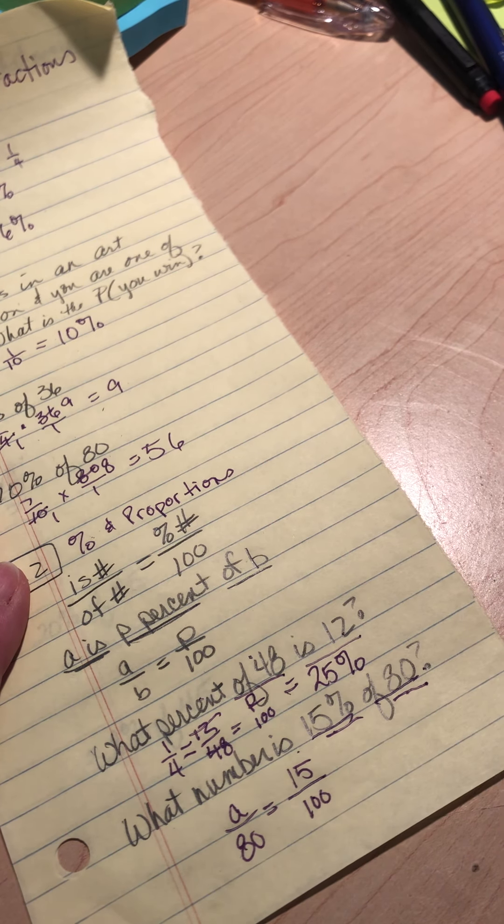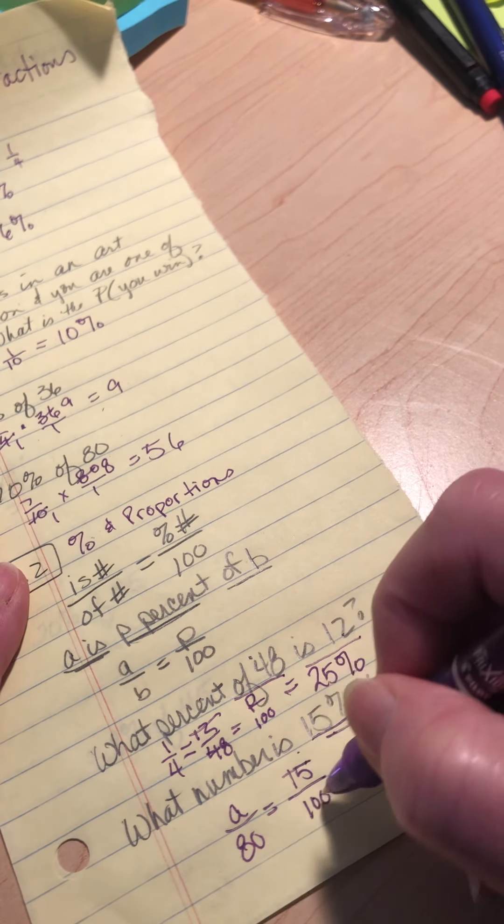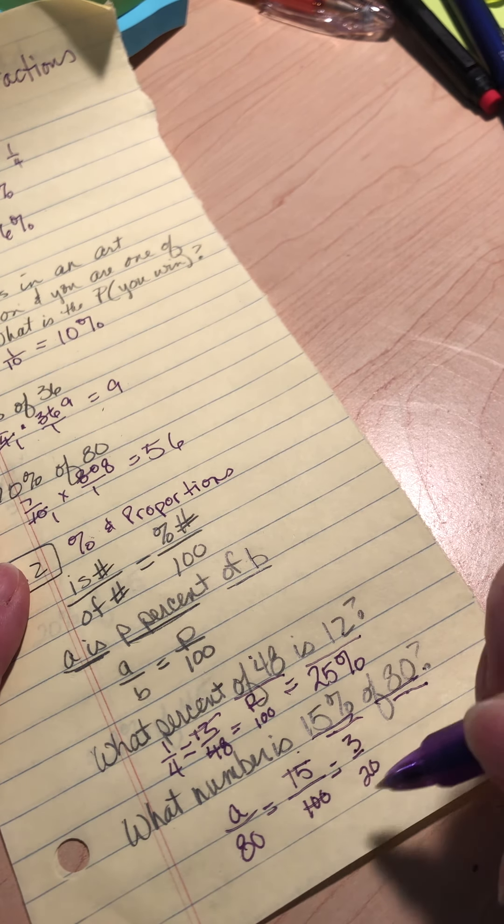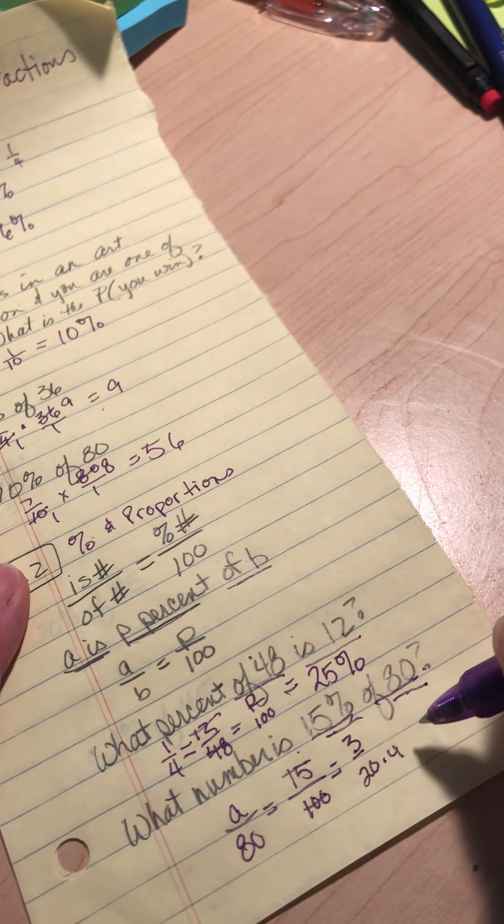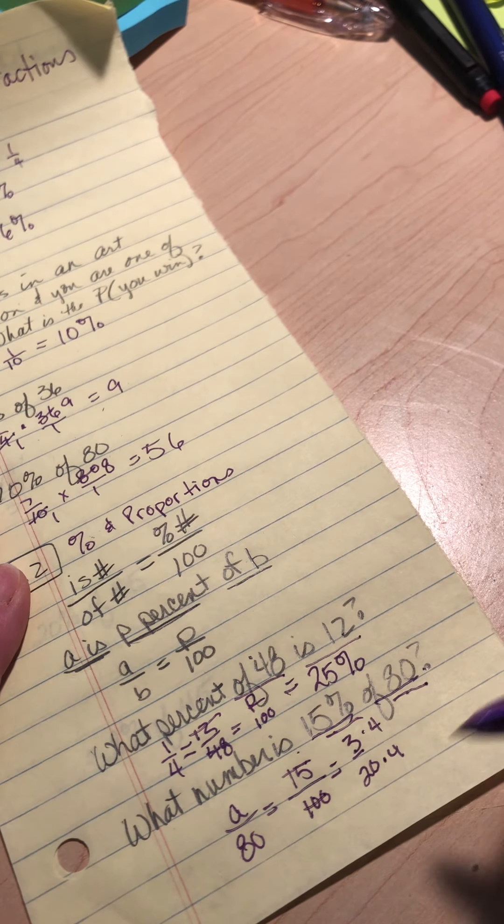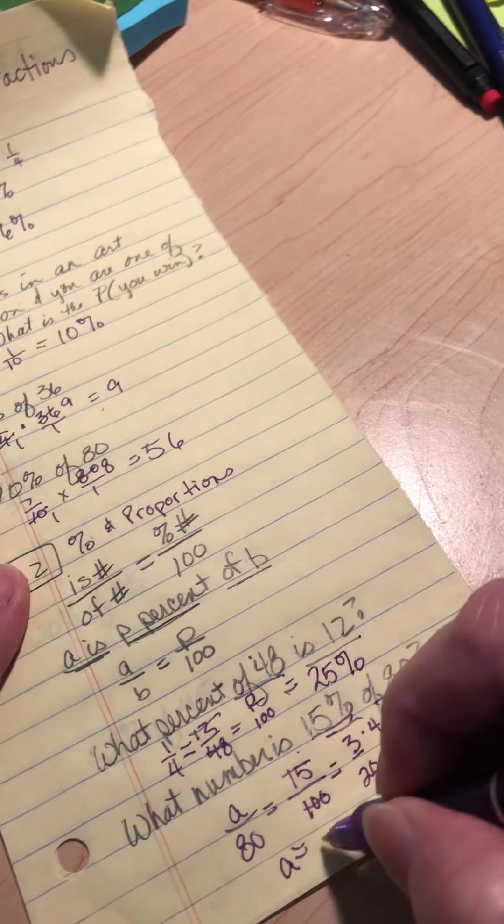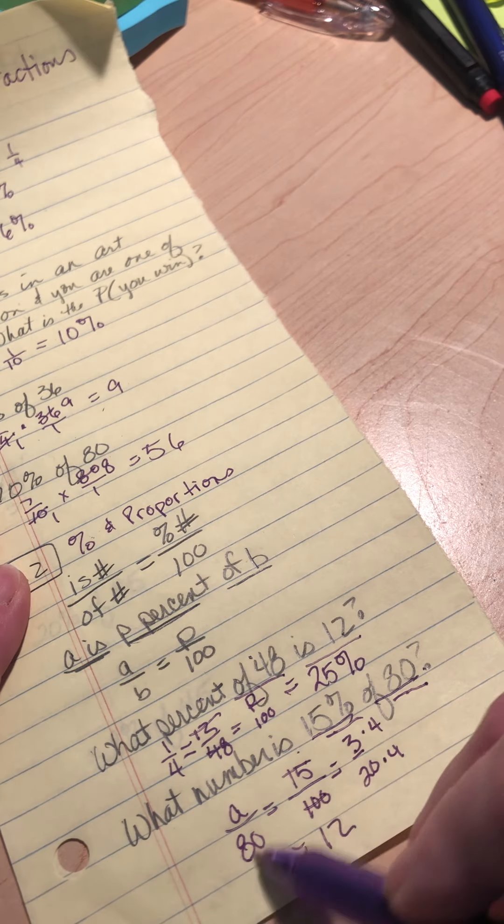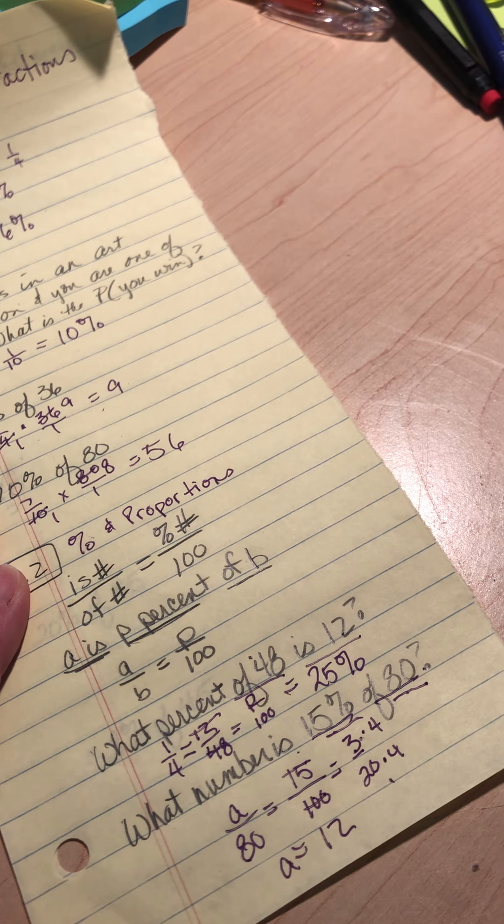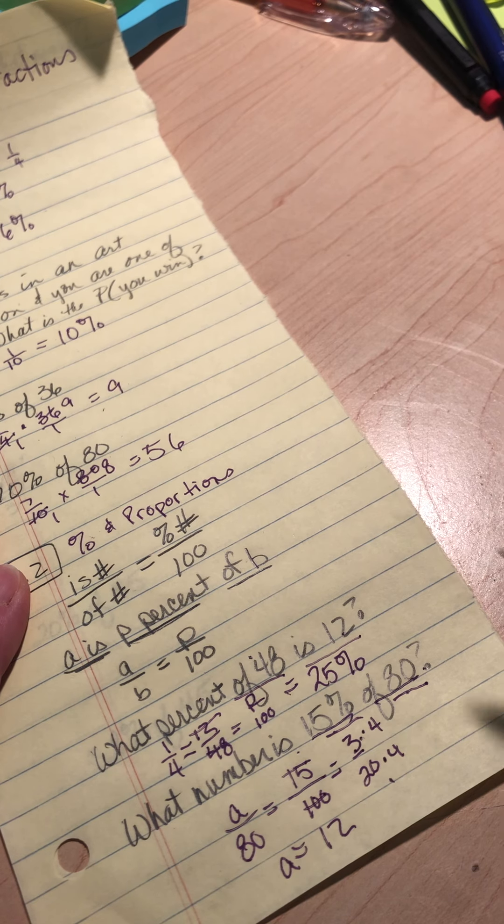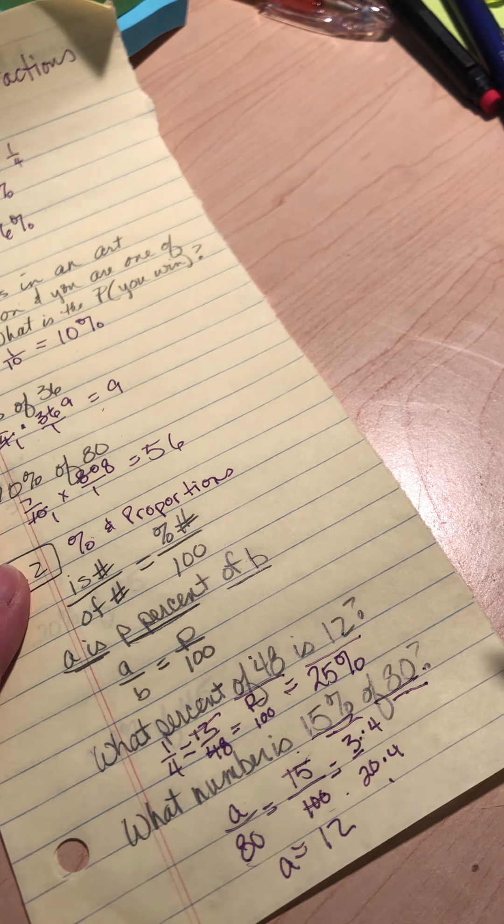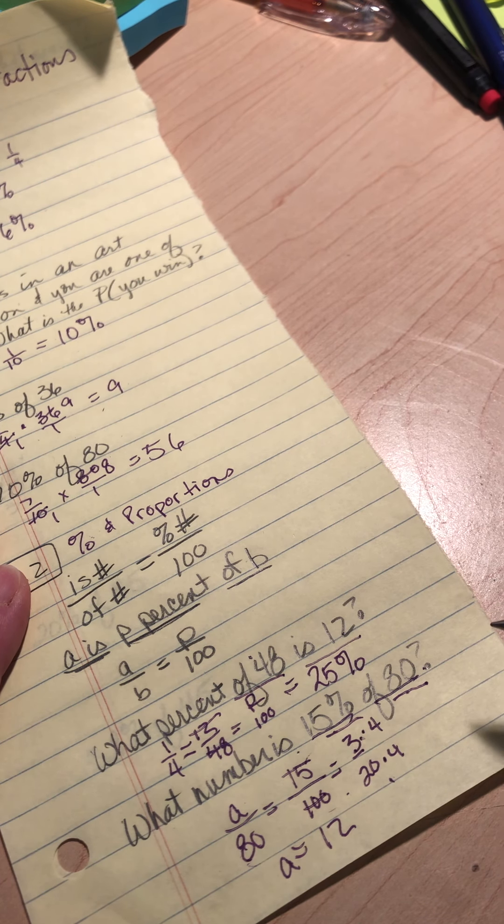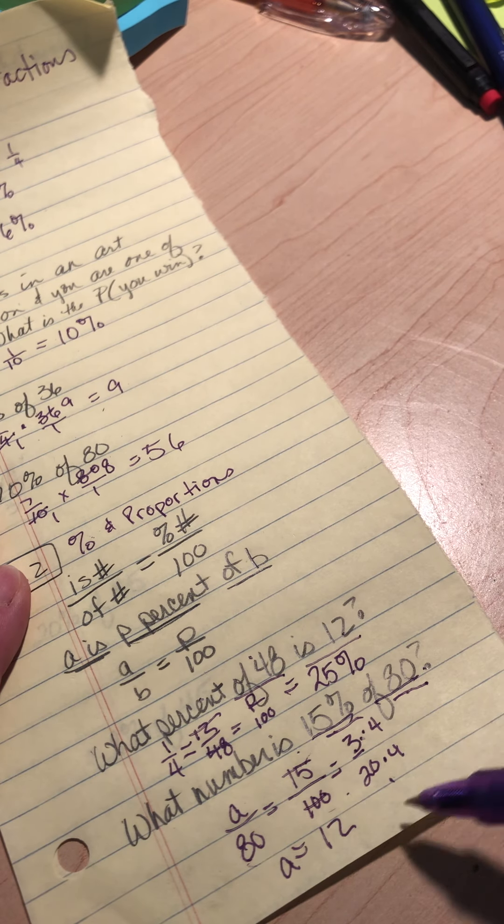Now, 15 over 100, I can simplify. I can divide those both by 5 and that's going to give me 3 twentieths. And then I can use my equal fractions. 20 times 4 is 80. So 3 times 4 is going to give me A. And A will equal 12. I could use my rule of 3. 80 times 3 divide by 20. I'm going to get the same thing. So you can use cross products. Use your simpler numbers though. 20 times A equals 240. Divide by 20, you get 12.